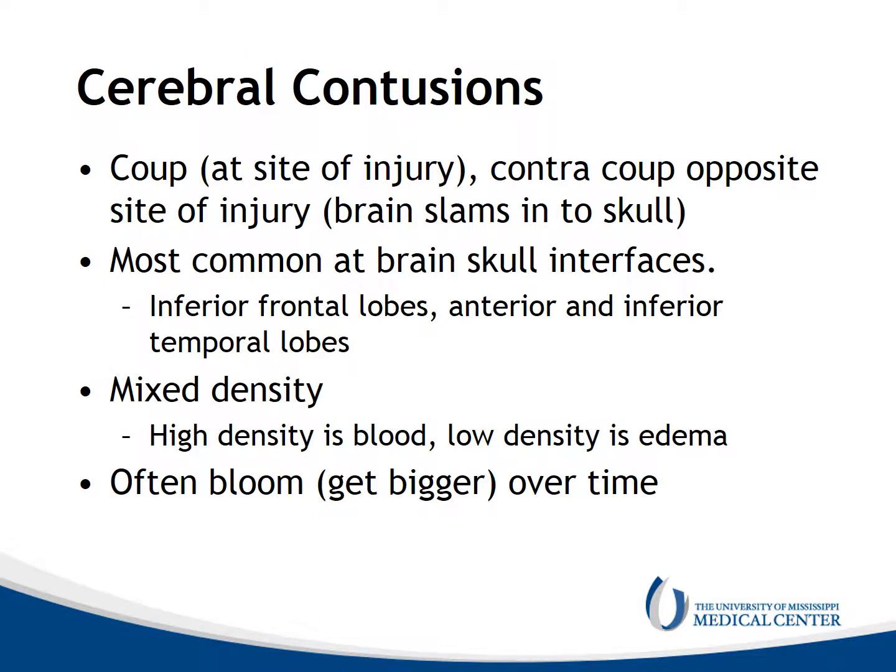Cerebral contusions occur in trauma. They may be coup at the site of injury or contrecoup where they're opposite the site of injury — that's where the brain slams into the skull. Usually they're at the brain-skull interfaces, inferior frontal lobes, anterior and inferior temporal lobes. The contusions may be of mixed density: the high density is the blood, the low density is the edema, and they often get bigger over time.